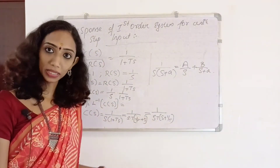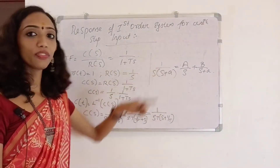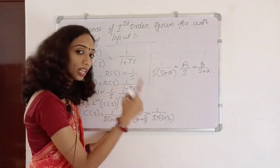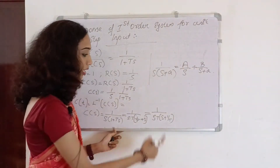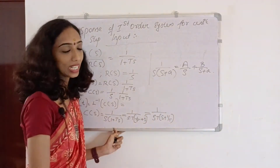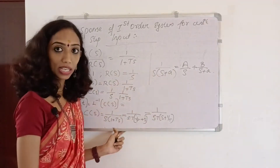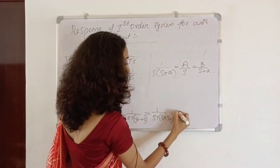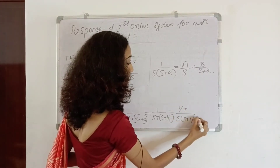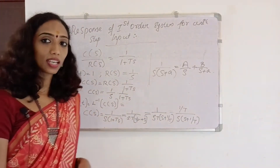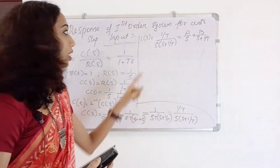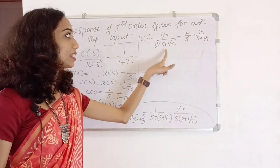That gives 1 by T divided by S into (S plus 1 by T). The denominator is now in S into (S plus A) format. So C of S equals (1 by T) divided by S into (S plus 1 by T). That is the partial fraction form.